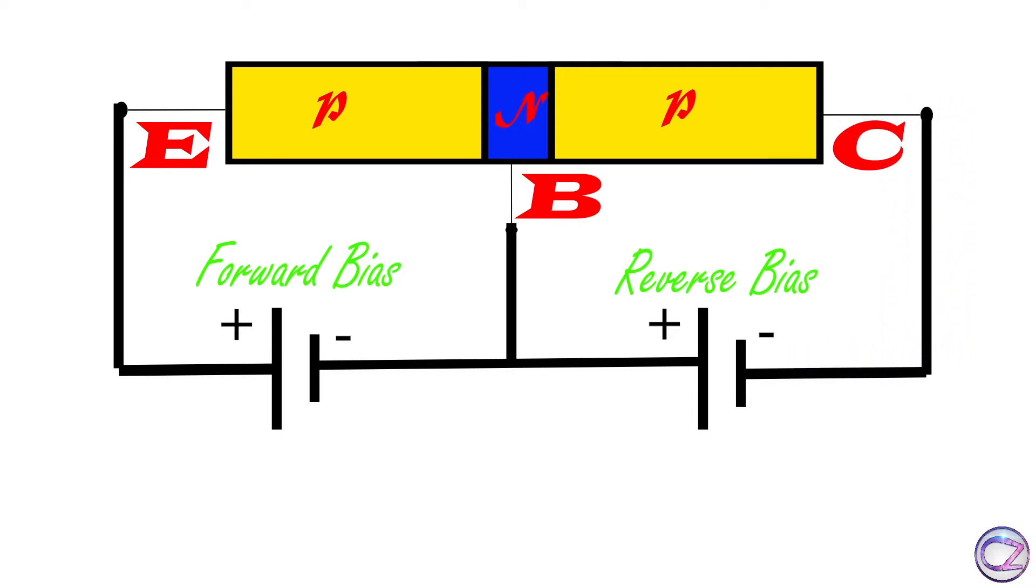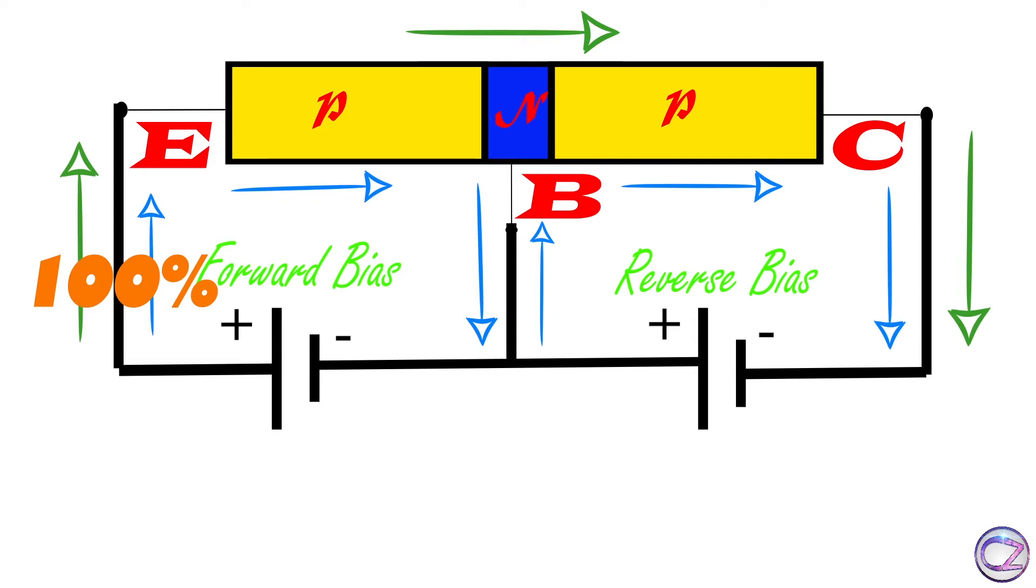Now look here, holes are flowing clockwise, so current is also flowing clockwise. Here the emitter expresses 100% current, which is divided into 5% and 95%. So same equation, IE equals IB plus IC.